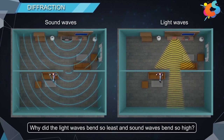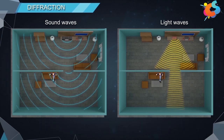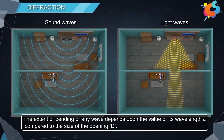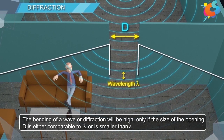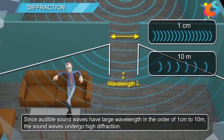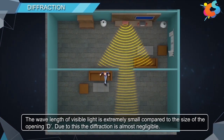The question is: why did the light waves bend so little and sound waves bend so much? The extent of bending of any wave depends upon the value of its wavelength lambda compared to the size of the opening d. Diffraction will be high only if the size of the opening d is either comparable to lambda or smaller than lambda. Since audible sound waves have large wavelengths in the order of 1 centimeter to 10 meters, they undergo high diffraction. However, the wavelengths of visible light are extremely small compared to the size of the opening d, so diffraction is almost negligible.